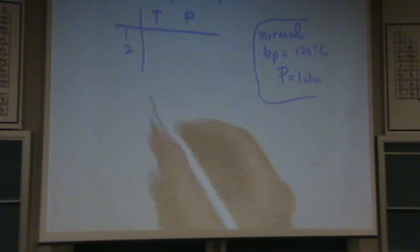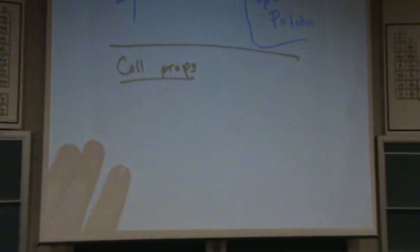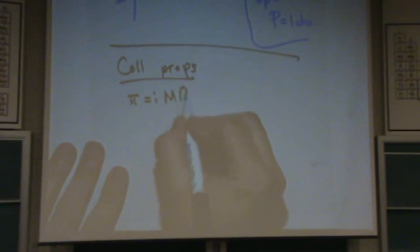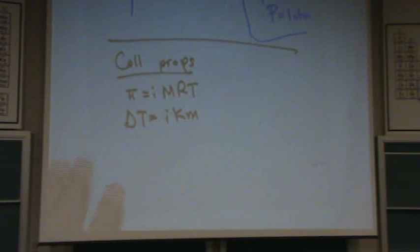Okay, so we're going to do colligative properties. Here's how I think of colligative properties. I only think really of two formulas. One is this one, pi equals IMRT. Another one is delta T equals IKM, both of which should be given on the exam.